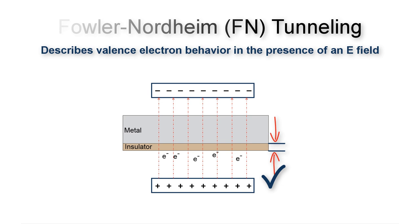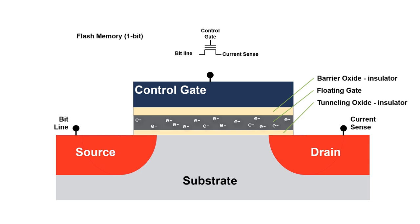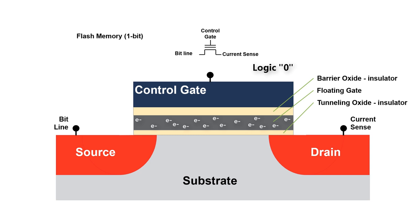Here is a flash memory cell that is programmed to a logic zero state, and we want to erase it back to a logic one state. This is the gate symbol and this is a cross-section drawing. These E-minus symbols represent our electrons that are trapped on our floating gate. These trapped electrons make this a stored logic zero memory bit, and removing them will make this an erased logic one memory bit.